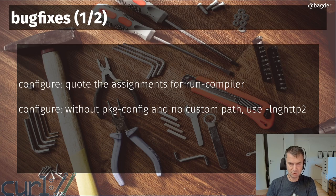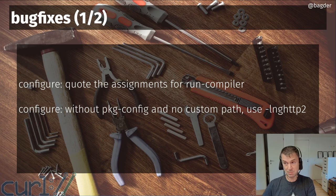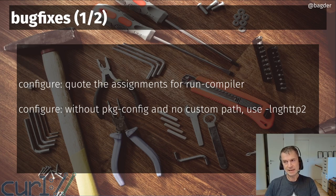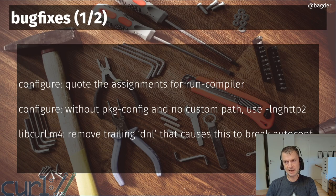I also fixed another issue in configure: basically how configure finds the nghttp2 library. If you don't have pkg-config and you have nghttp2 installed in a default path, you could end up detecting the library being there but not using the correct option to link with it, resulting in a link error when you built curl. It was easy to fix manually, but now it should work correctly.